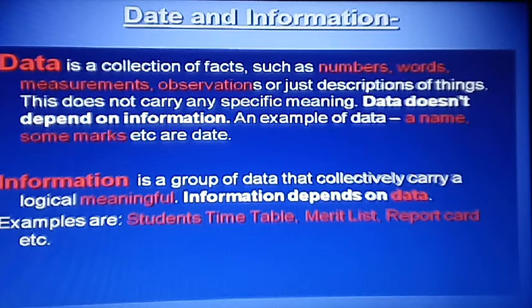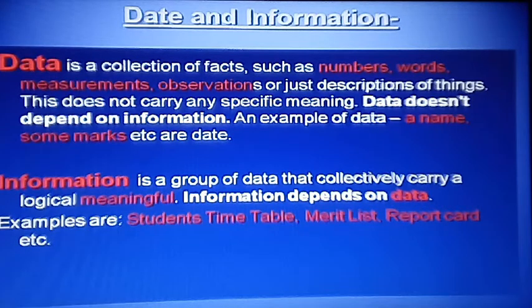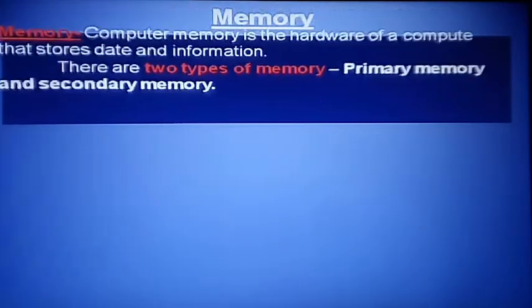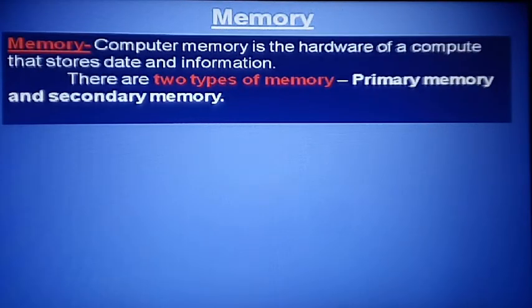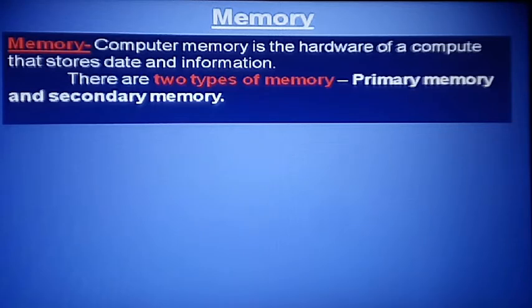Data is just a collection, while information is meaningful data — for example, student timetables and student report cards. Now, what is computer memory? Computer memory is a hardware component of the computer that stores data and information. The place where you store data is called memory.